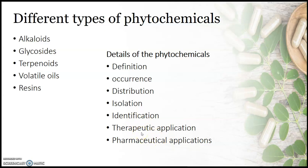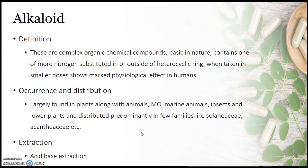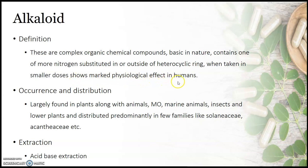As an example, we are going to study alkaloids. In the definition of alkaloids: alkaloids are complex organic chemical compounds, basic in nature, contain one or more nitrogen atoms substituted in or outside of the heterocyclic ring, and when taken in a smaller dosage, show marked physiological effect in humans.